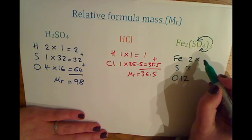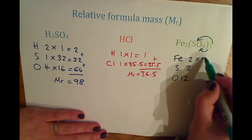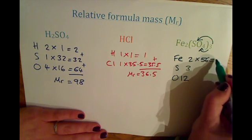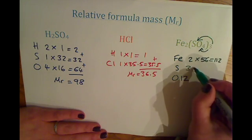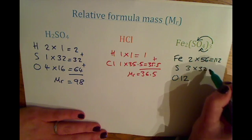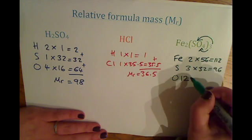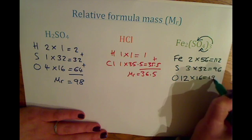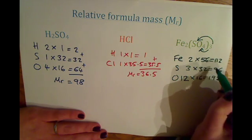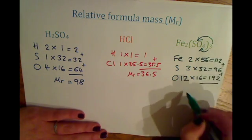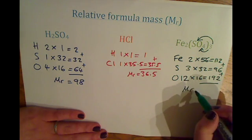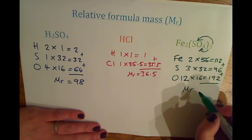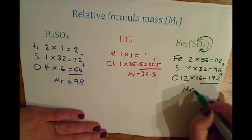Multiply that by the relative atomic mass on the periodic table. You've got 56 for iron, you've got 32 for sulfur, and you've got 16 for oxygen. So if you add these numbers together, you'll find that the relative formula mass of iron sulfate is 400.